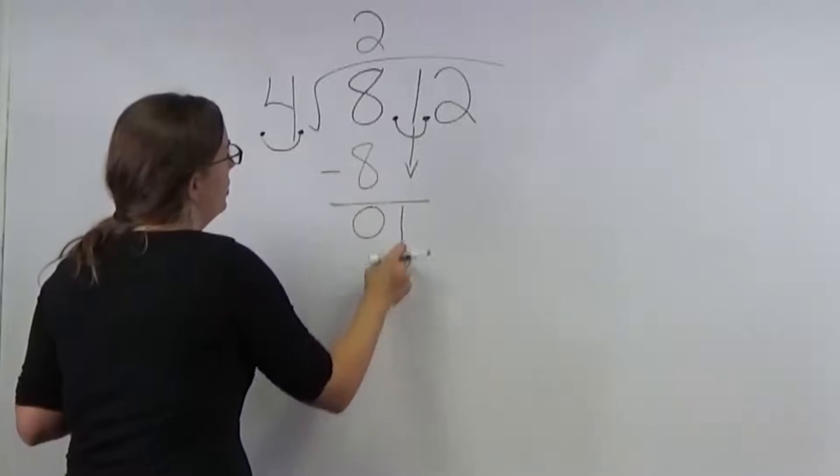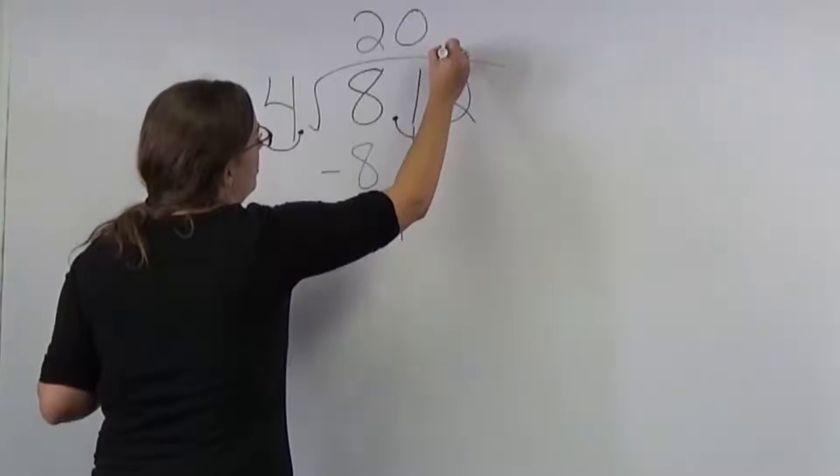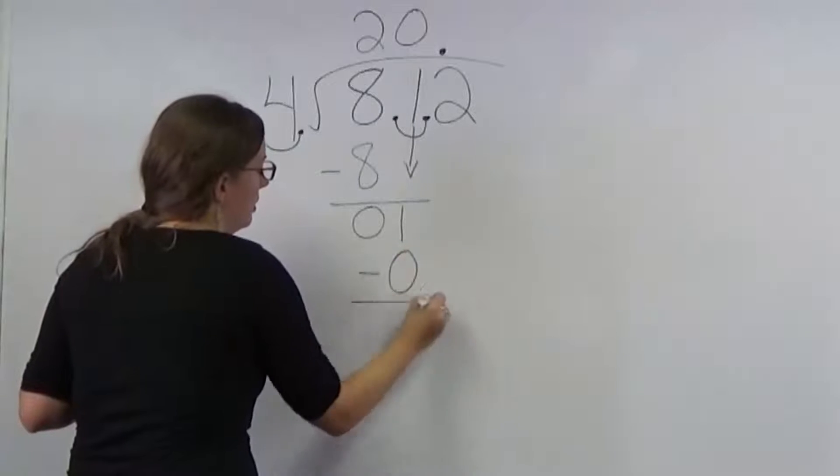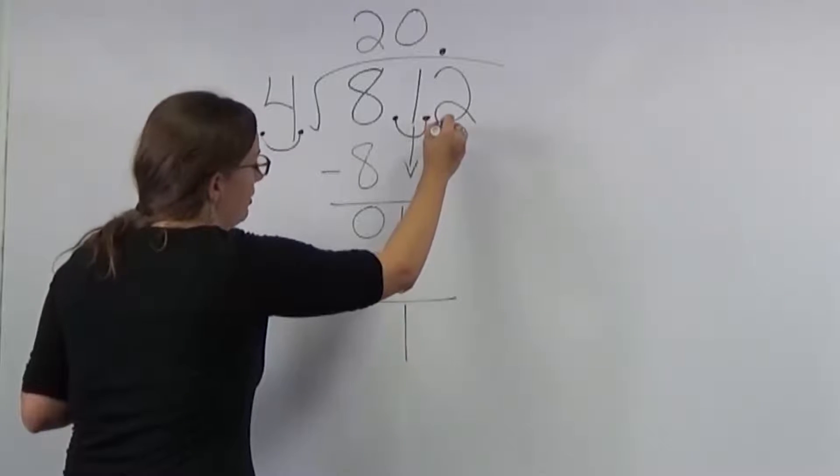4 goes into 1 0 times, and now your decimal goes here because you moved it over the 1 time. 0 times 4 is 0, and then you bring down the 2.